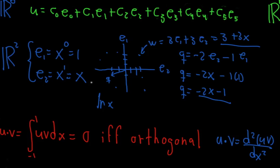In the last video we were seeing how you could represent any set of polynomials as a linear combination of these two base vectors — polynomials of this kind, of course. And we were saying that you can't represent the natural log of x as a linear combination of these two base vectors. But we were thinking, which other base vectors can I use, and what kind of functions can I represent in those vector spaces?